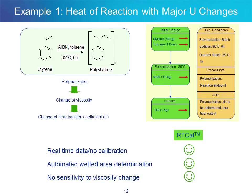The first example describes the polymerization of styrene using toluene as a solvent and AIBN as an initiator. There is an initial charge of styrene and toluene. The temperature is raised to 85°C, AIBN is added, then the mixture is held at constant temperature for 6 hours. The reaction mixture is next cooled down to 25°C and hydroquinone is added to quench the reaction. It's a polymerization reaction where the mixture becomes fairly viscous, so the heat transfer coefficient gets lower over time.